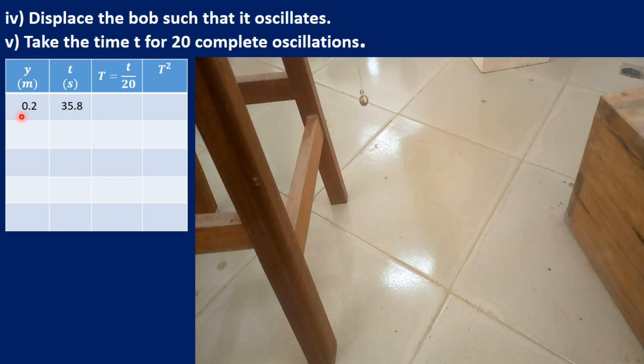So the distance is 20 centimeters, divided by 100 is 0.2 meters. And the time for 20 complete oscillations is 35.8 seconds.